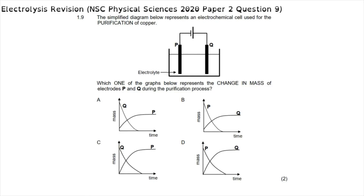The electrolysis section of the chemistry paper starts with question 1.9, which reads: the simplified diagram below represents an electrochemical cell used for the purification of copper. We can see that this is an electrochemical cell because it has a battery or cell, where the long terminal is the positive one and the short one is the negative one, which means we have a flow of electrons from electrode Q towards electrode P.